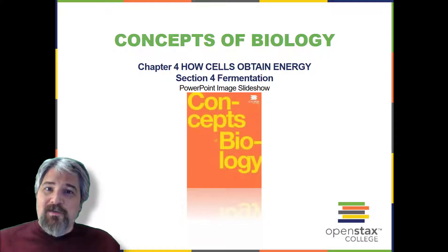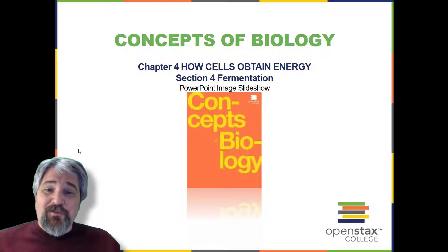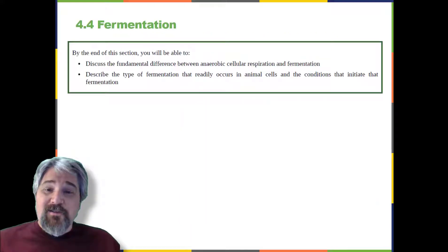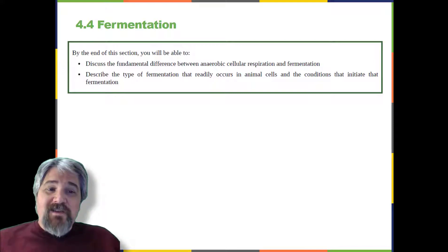Welcome back to Chapter 4, Section 4: Fermentation. By the end of this section, you will be able to discuss the fundamental difference between anaerobic cellular respiration and fermentation, and describe the types of fermentation that readily occur in animal cells and the conditions that initiate that fermentation.